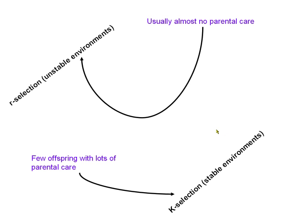The AP Bio exam loves to talk about R-selection and K-selection, so definitely read about them in your book. Surprisingly, they're not actually all that widely used anymore in real ecology. You can Google the controversy about K-selection and R-selection and find that they are definitely controversial — some people don't really like the use of them.